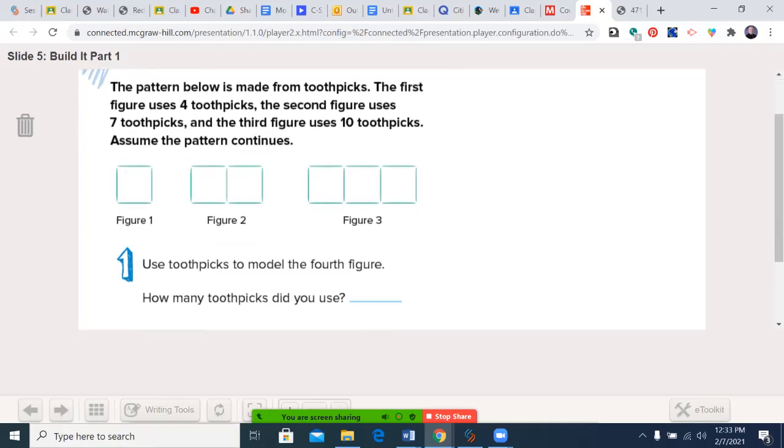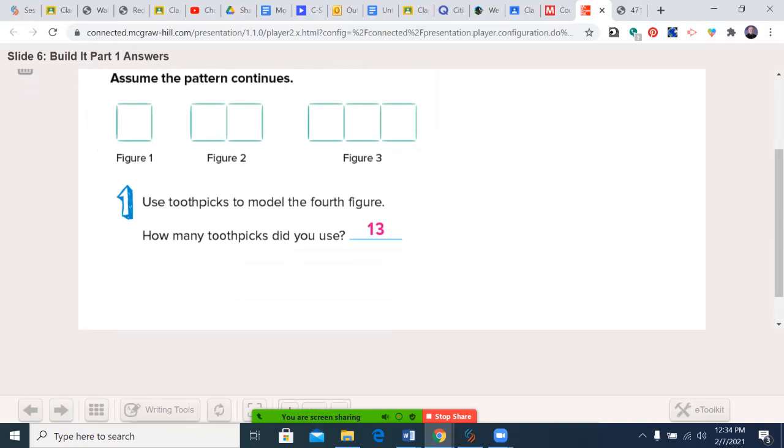We start with the first one here, also found on page 507. The pattern below was made from toothpicks. The first figure uses four toothpicks, the second figure uses seven, the third uses ten. Assume the pattern continues. Our first step: we had four, seven, ten. So we're going up by what number? The difference between four and seven is three more. The difference between seven and ten is three more. So what do you suspect that we'll be adding to figure four? If you said three more, you're correct. We will have 13: four, seven, ten, thirteen.